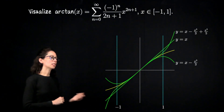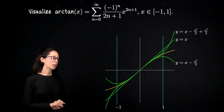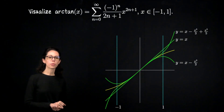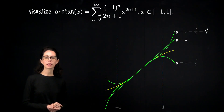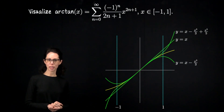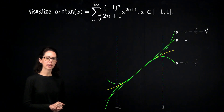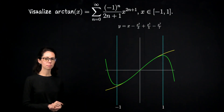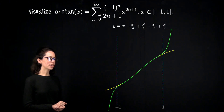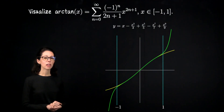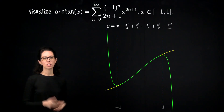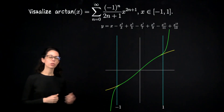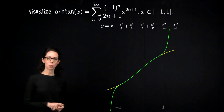Let me now let this demonstration run through the next few partial sums so you can see that convergence is happening between x equals negative 1 and 1. Also notice that we lose convergence to the left of negative 1 and to the right of x equals 1.